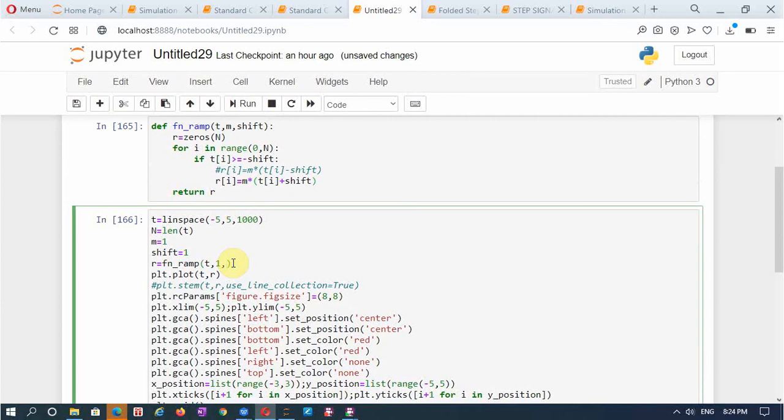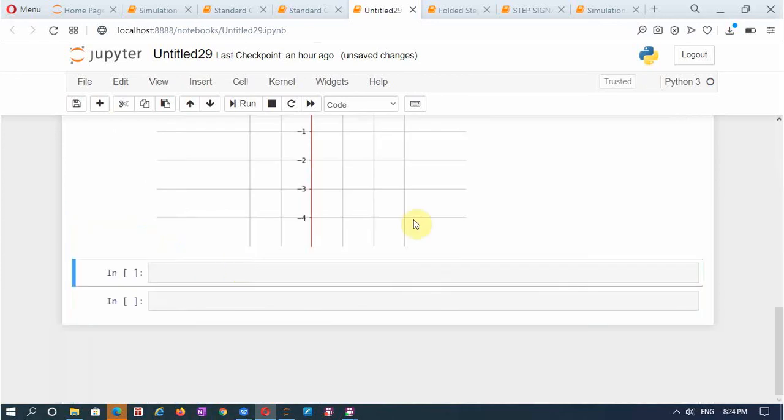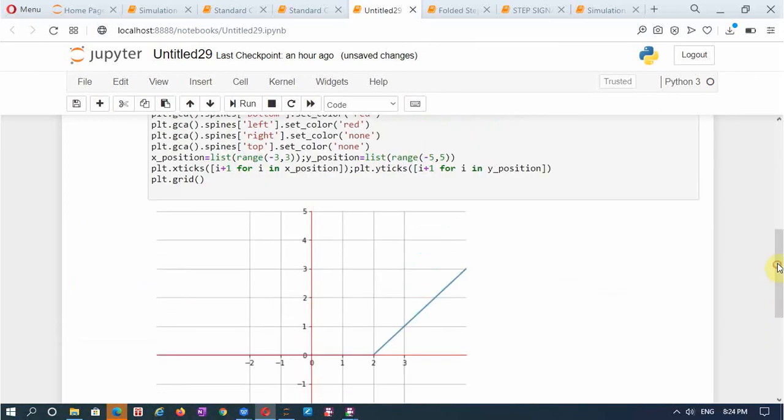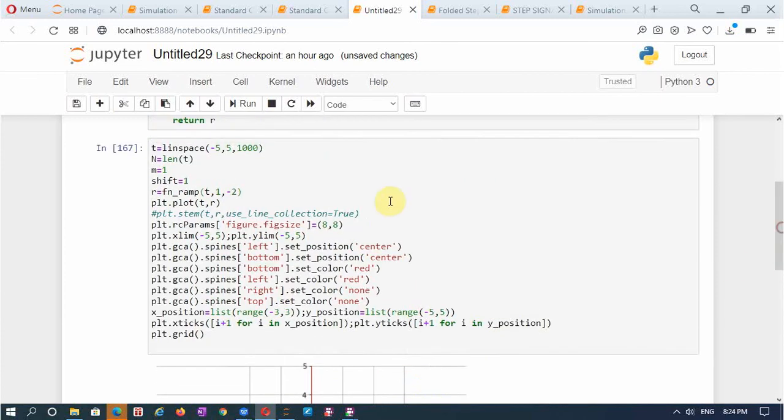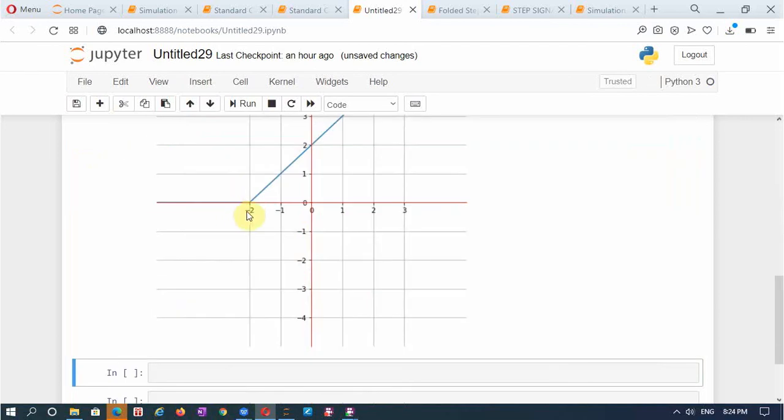I will make it minus 2. This must shift the signal to the right of t is equal to 0 by a quantity is equal to 2. This is the shifted ramp shifted to the right and if I make this positive it will shift it to the left.